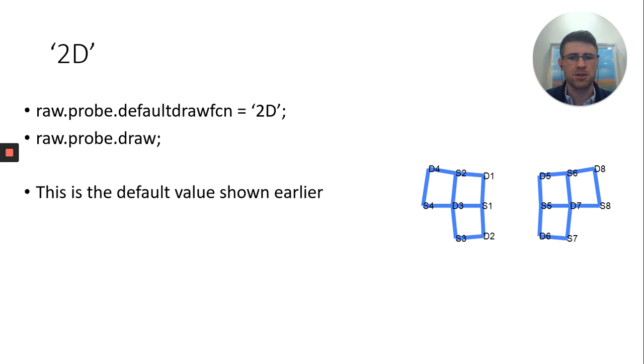And then finally, the last option you have is 2D. But if you recall, when we first wrote raw.probe.draw without specifying the default draw function, we got this output. So the default draw function, if you don't specify it, is two-dimensional. Very little information, but it does give you the rough idea of where everything is. It does have labels on it. You see S1, S2, S3, S4, D1, D2, et cetera. So this is very simple, very straightforward, how you would actually go to draw the probe in the NIRS toolbox.